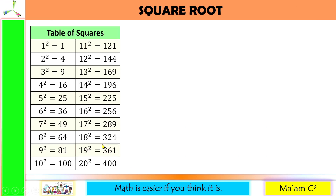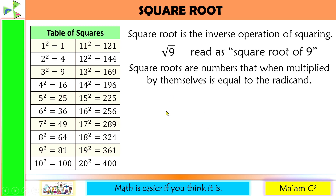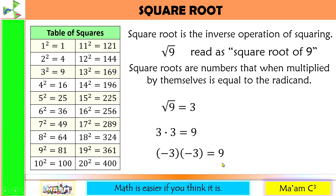Are you familiar with the table of squares? Knowing this is a great help to understand square roots, because a square root is the inverse operation of squaring. Let's have an example: the square root of 9. Square roots are numbers that when multiplied by themselves equal the radicand. Looking for 9 in our table, it is equal to 3 squared, meaning 3 times 3. So the number multiplied by itself is 3, meaning the square root of 9 is equal to 3. When you multiply negative 3 by itself, it also gives you 9. Therefore, the correct answer for the square root of 9 is positive and negative 3.